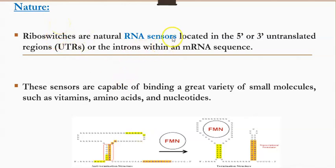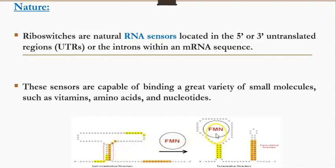Coming to the nature of the riboswitches, these are natural RNA sensors which are located either at the 5' or the 3' untranslated regions of the mRNA, or sometimes they are present even within the introns of the mRNA sequence. These sensors are capable of binding a great variety of small molecules like vitamins, amino acids, and nucleotides. Here we can see one riboswitch to which the small metabolite FMN has been bound, and this riboswitch is present at the 5' terminus of the functional mRNA molecule.